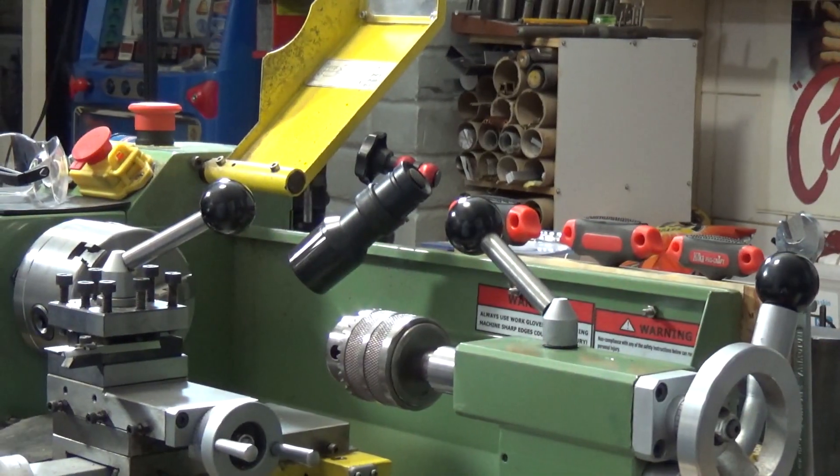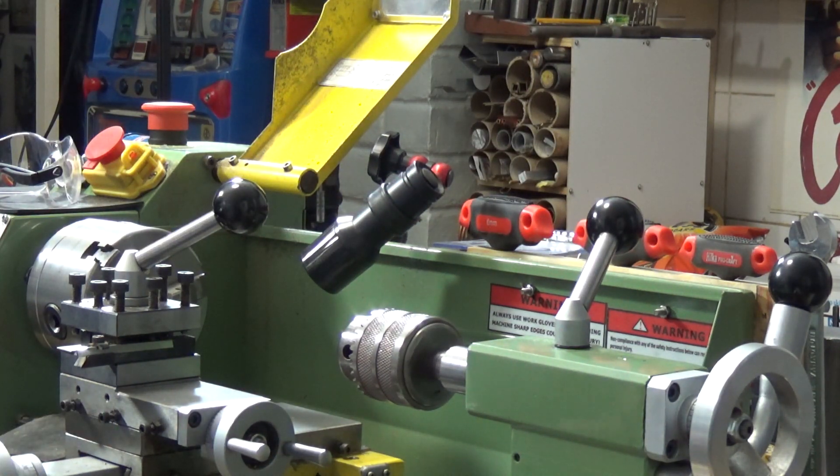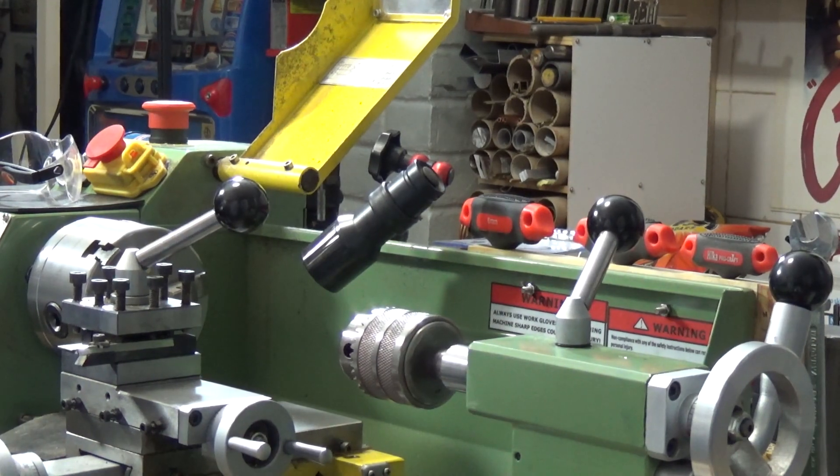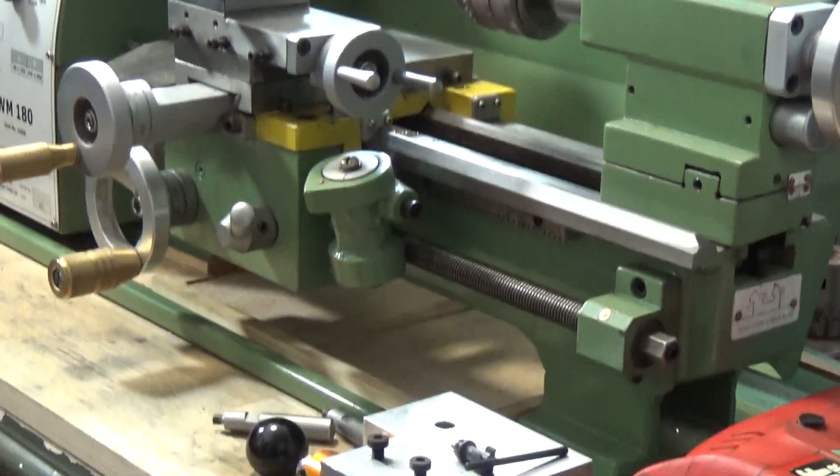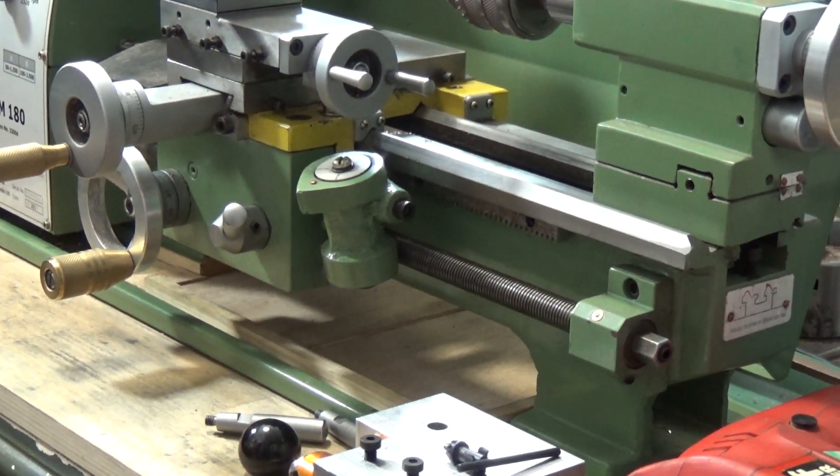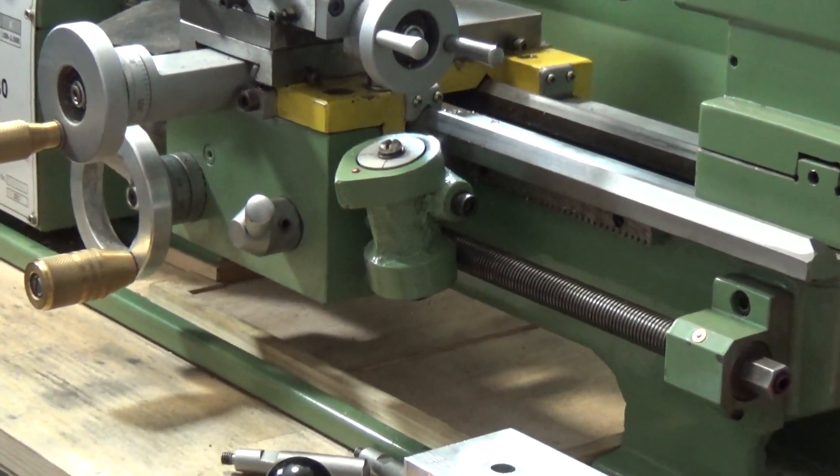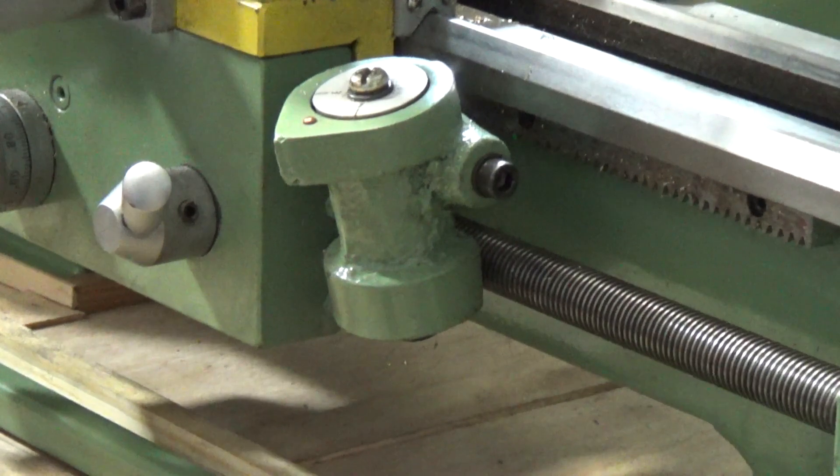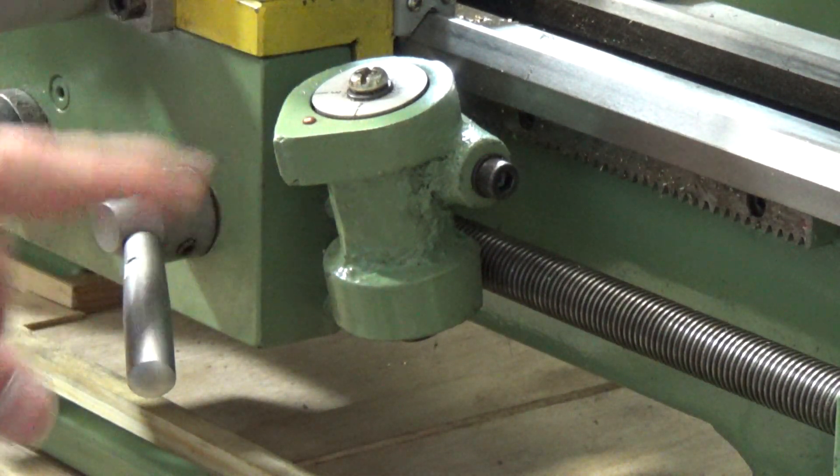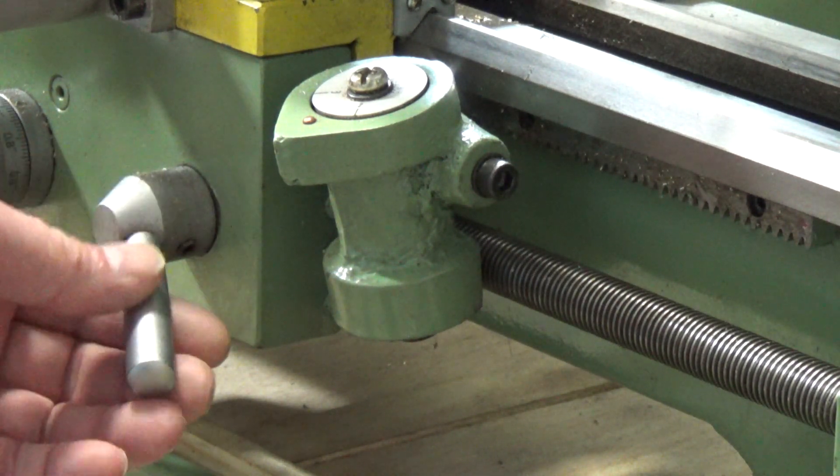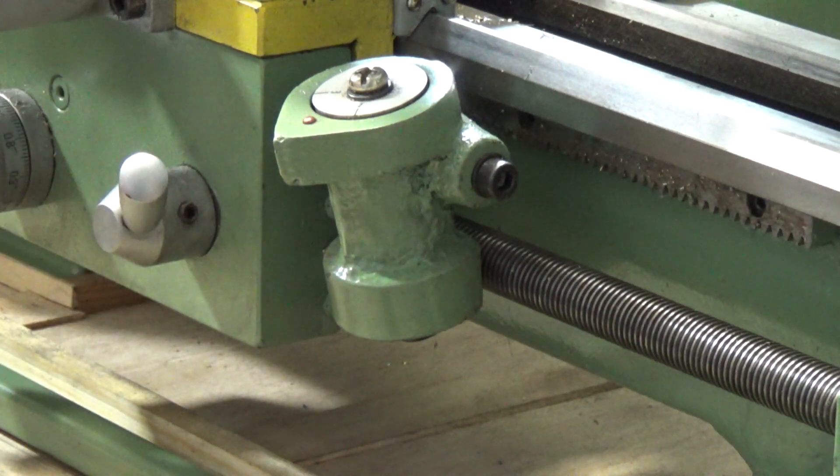As you can see I've already done the tool post handle and the tailstock quill lock, but we still have left to do one remaining which I'm going to do today, and that is this little matey here which is the carriage power feed lever.